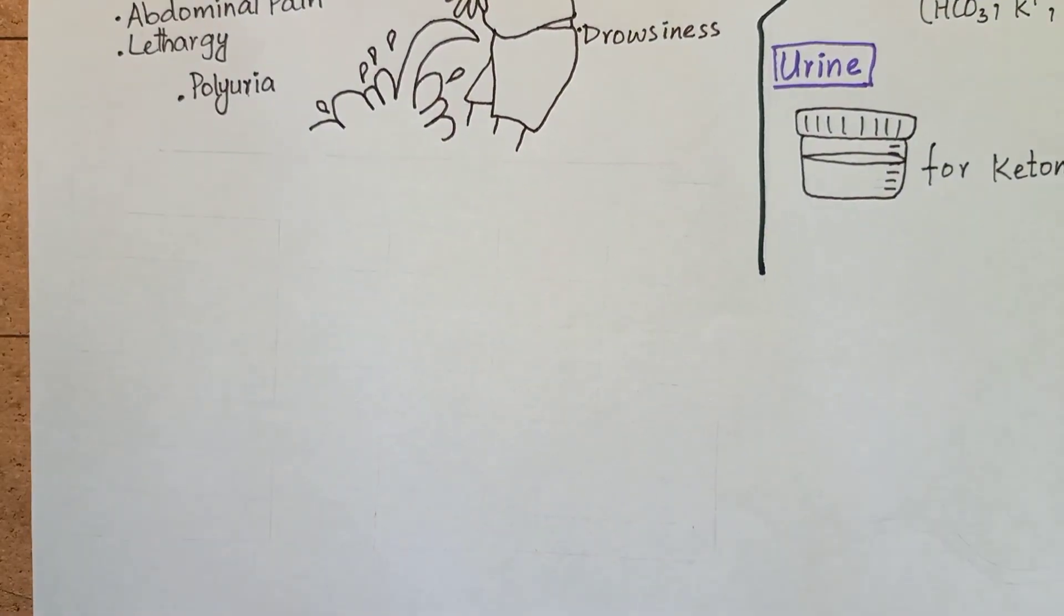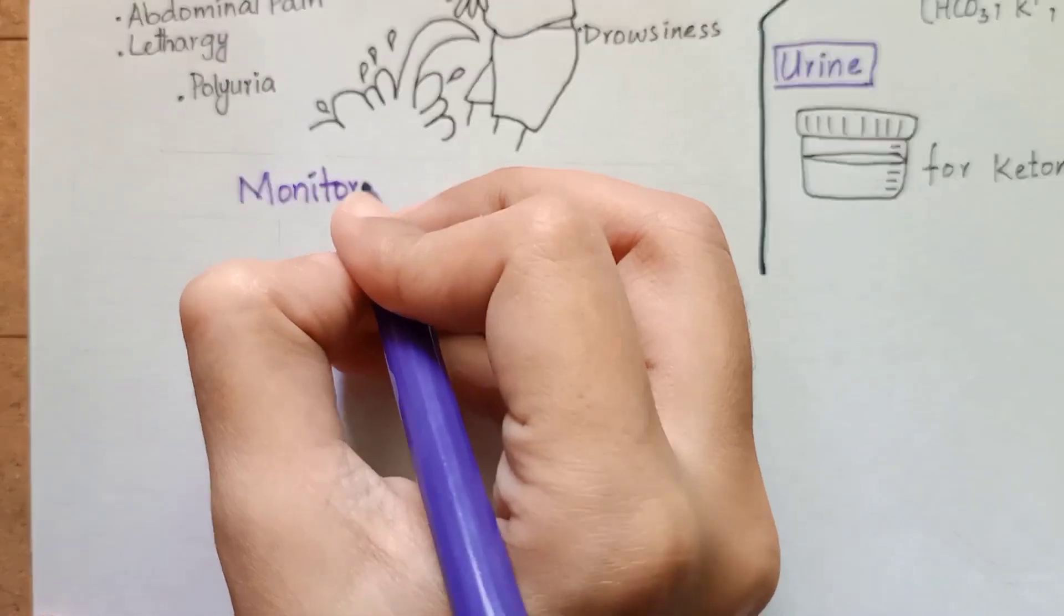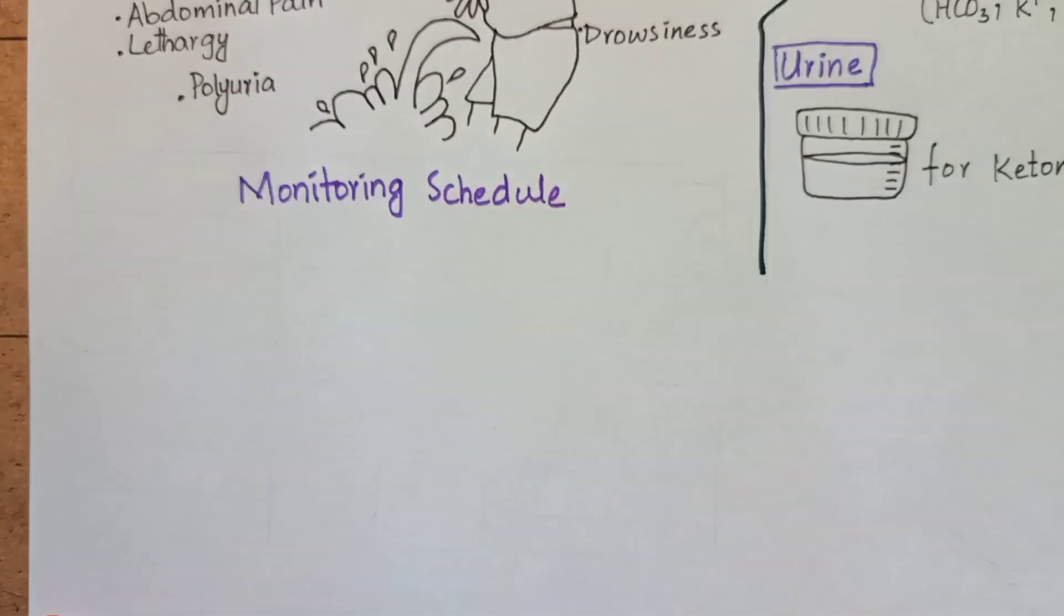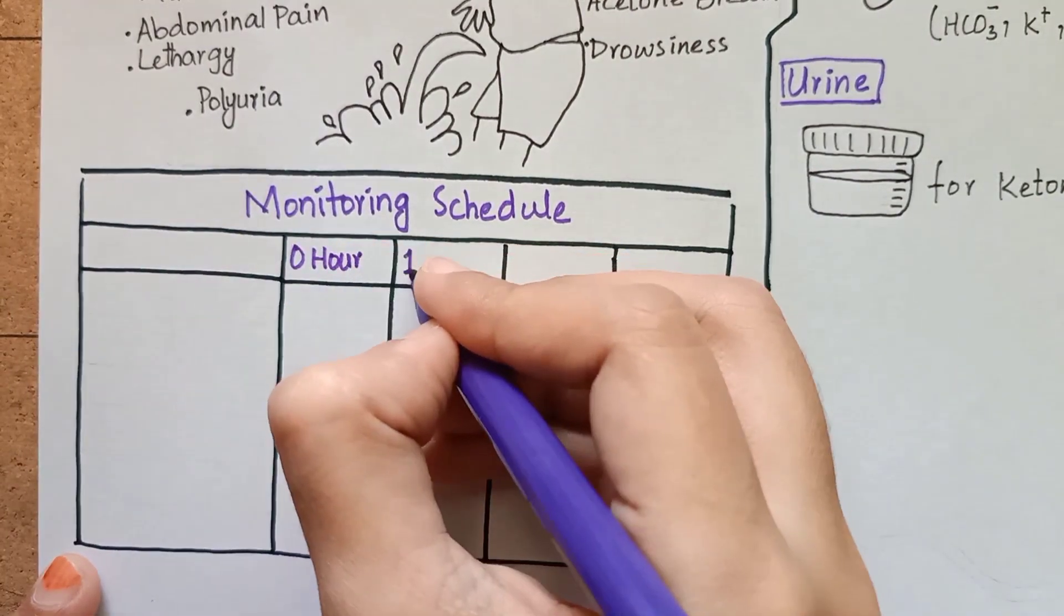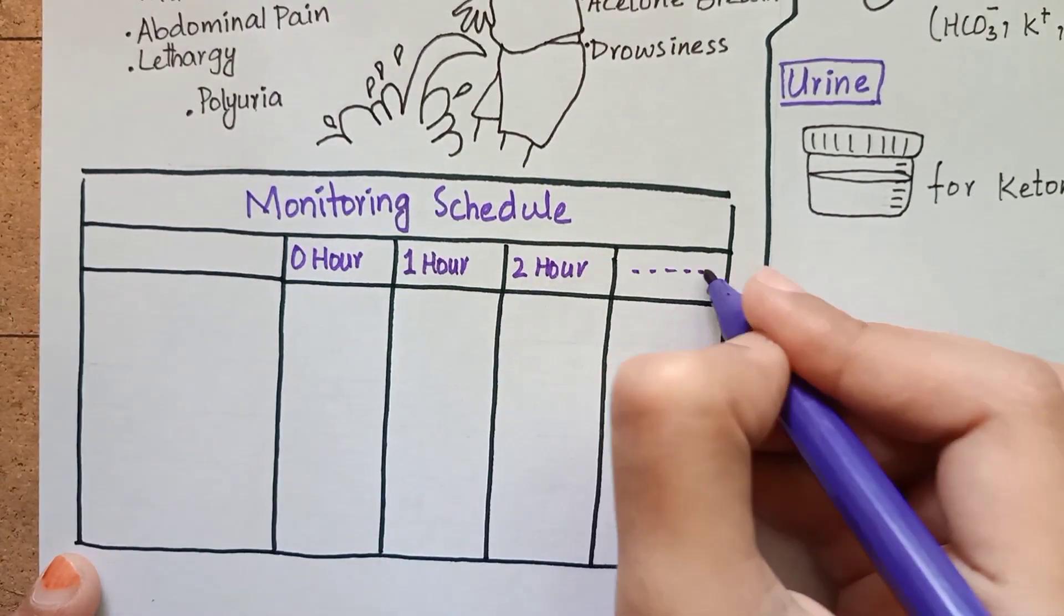During first 24 hours of management of diabetic ketoacidosis, regular clinical and biochemical reviews are needed. For that, you can establish a monitoring schedule.